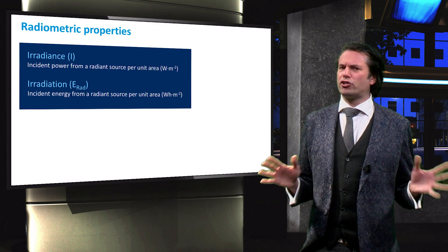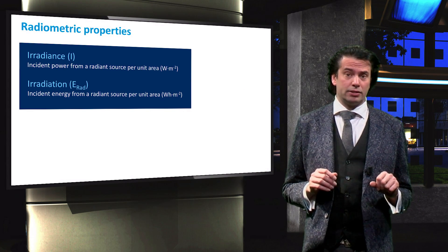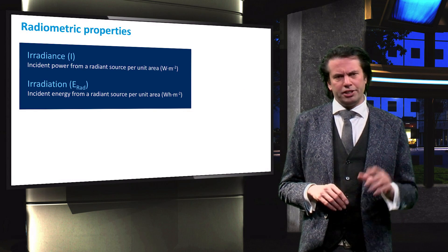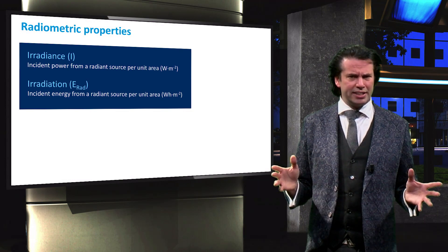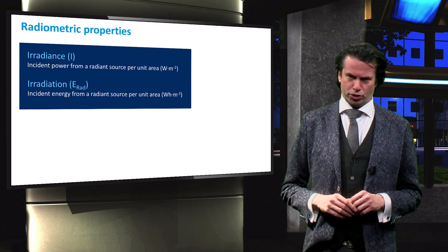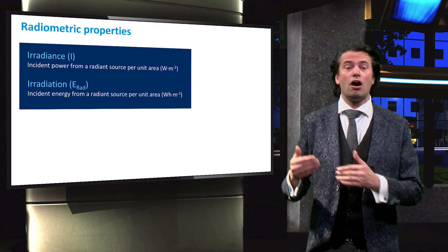First, we will discuss some radiometric properties of incident light, namely irradiance and irradiation. The irradiance is defined as the total power density incident on a surface from a radiant source. The irradiation is the total energy density incident on a surface.